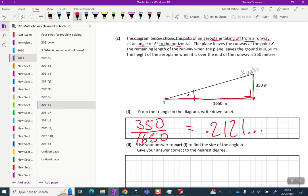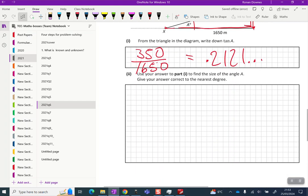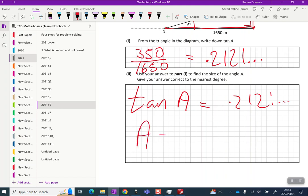Now use your answer to part i to find the size of the angle and give your answer correct to the nearest degree. So we know that the tan of A equals 0.2121 etc., so to get A we're going to have to use the inverse tan.